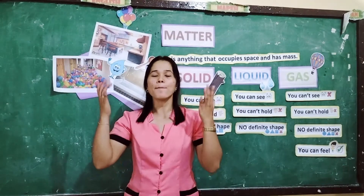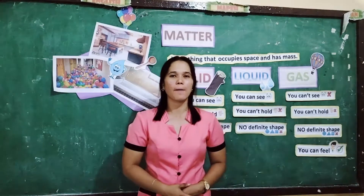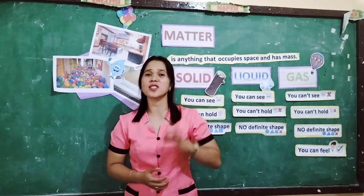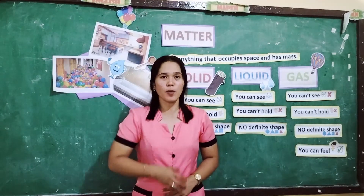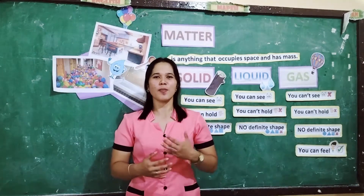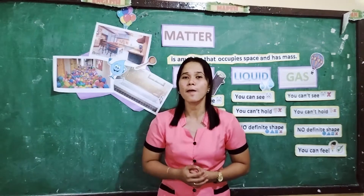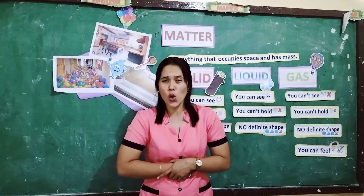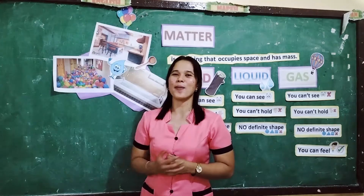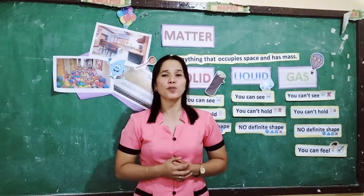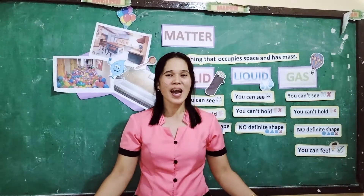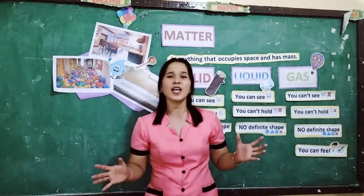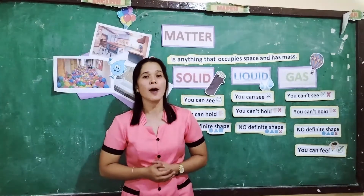I want you to stand up and group into three by counting one to three. Group one will stay at the right side, group two will stay at the back, and group three will stay at the left side. What you are going to do is demonstrate the three states of matter by moving your body. Group one demonstrates solid by linking their arms together, staying close and moving slowly without breaking their shape. Group two demonstrates liquid by holding their hands together and walking slowly around the room. Group three demonstrates gas by moving their body freely without touching each other.